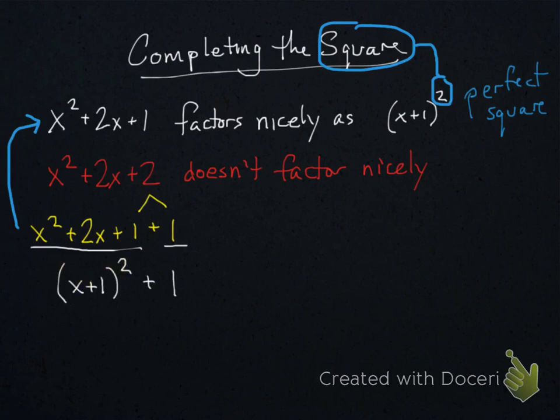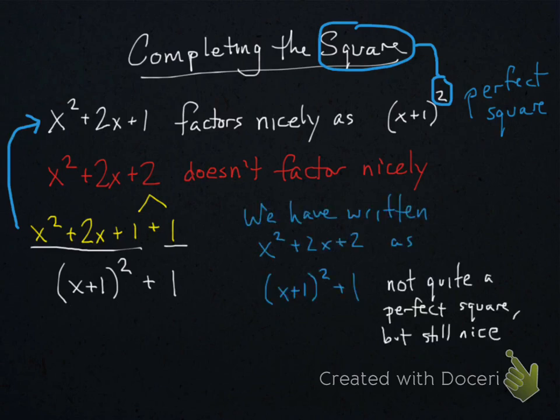We bring down that plus 1 to find that we have written x squared plus 2x plus 2 as x plus 1 quantity squared plus 1, which is almost a perfect square. Writing a quadratic expression as almost a perfect square, as we just did, is called completing the square.